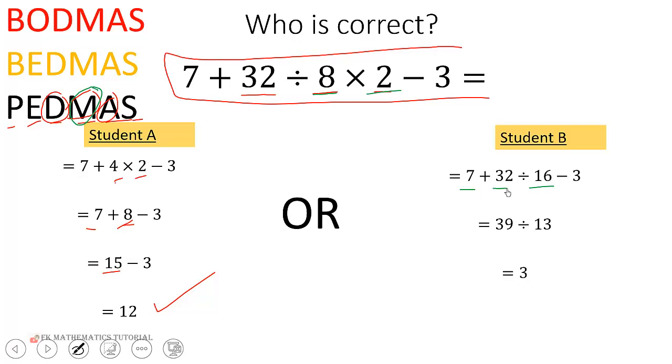...and 32 for addition, getting 39, then subtracted 16 and 3 for the subtraction step.